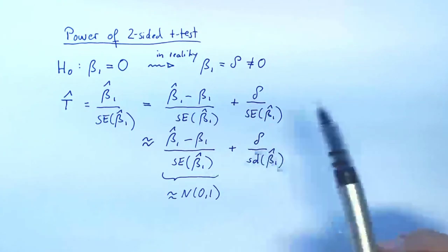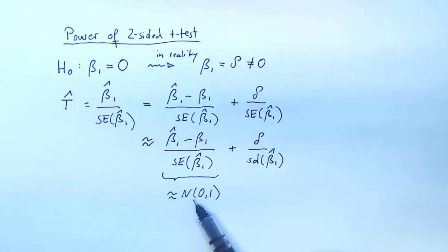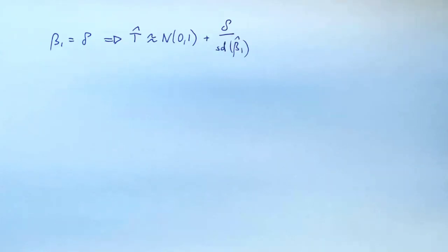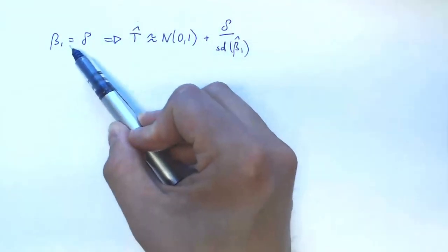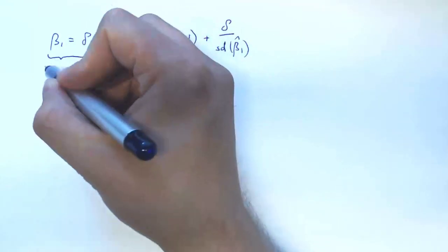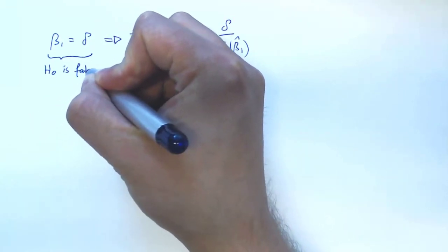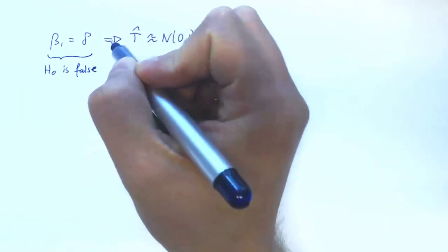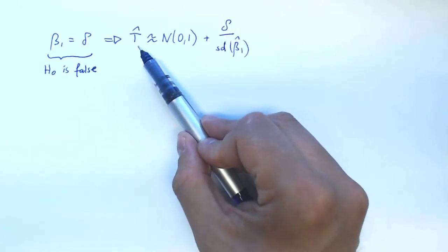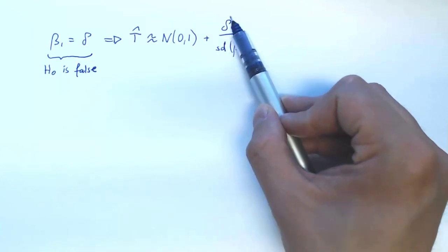Suppose, for example, if delta is a positive number, then it is a normal distribution that is shifted to the right. Suppose that the distance from the null hypothesis is delta. So we're in a scenario where to some degree H naught is false.